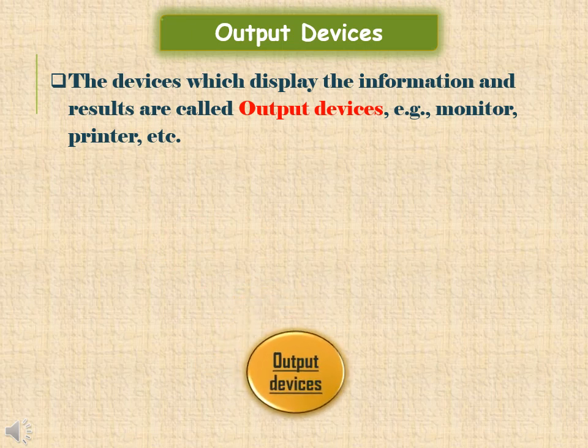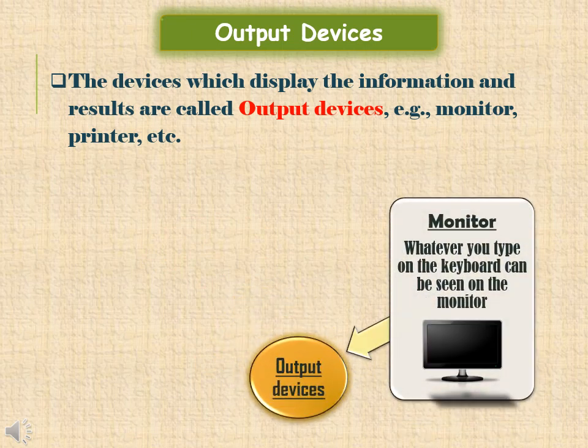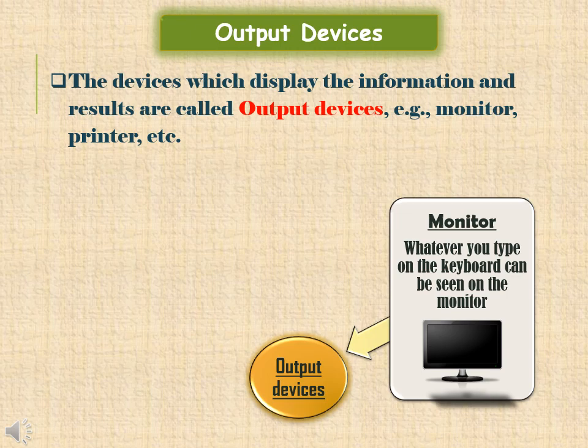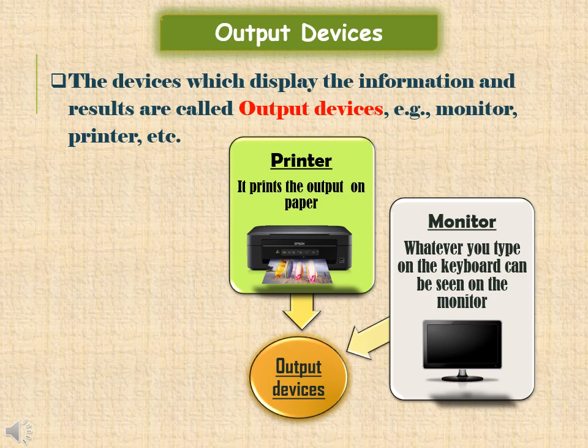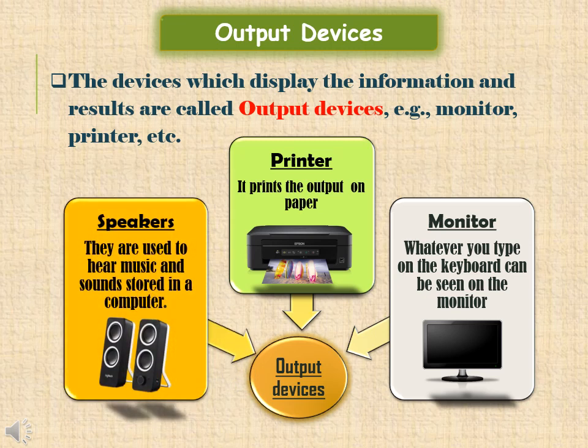The functions of these devices are as follows. Monitor — it looks like a TV screen. Whatever you type on a keyboard can be seen on the monitor. It also displays the processed information. Printer — it prints the output that you see on the computer system on paper. Speaker — speakers are used to hear music and sounds stored in a computer.